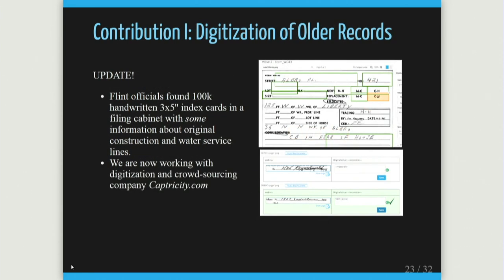Another data source was three-by-five index cards with work information — just sitting in a box. Flint City Hall, if you go there, is not staffed; there's no one working there, because of all the budget cuts. We've been working to digitize over 100,000 of these records using a company called CaptureCity.com, which takes paper records and converts them into spreadsheets using a mix of machine learning, Mechanical Turk, and other tools. It's harder than you think because there are about a dozen different types of forms filled out differently year to year.